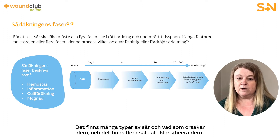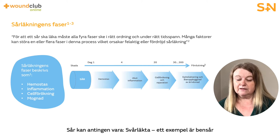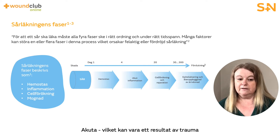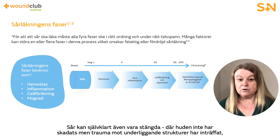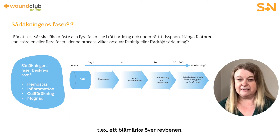The types and causes of wounds are wide-ranging and there are several different ways of classifying them. Wounds can be either chronic — an example of this could be a leg ulcer — or acute, which could be due to trauma. Wounds can be open, in which the skin has been compromised and underlying tissues are exposed, or closed, in which the skin has not been compromised but trauma to underlying structures has occurred, such as a bruised rib.